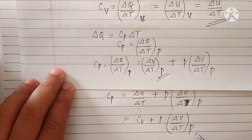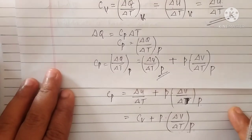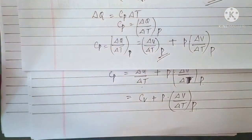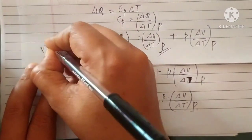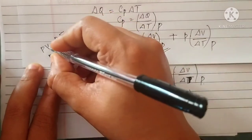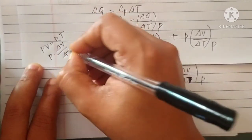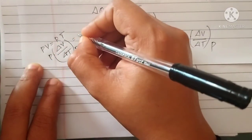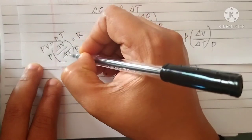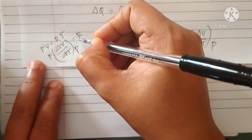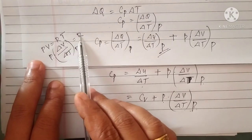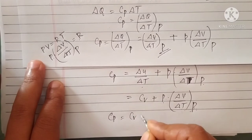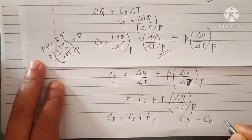We are considering an ideal gas. For one mole of ideal gas, the equation is PV equals RT. Differentiating with respect to temperature at constant pressure: P times delta V by delta T at constant pressure equals R. Substituting this into our expression, we get Cp equals Cv plus R, or Cp minus Cv equals R. Here Cp and Cv are the molar specific heat capacities at constant pressure and constant volume respectively, and R is the universal gas constant.